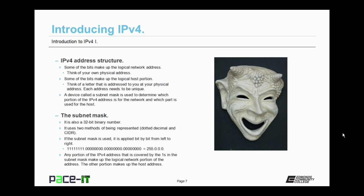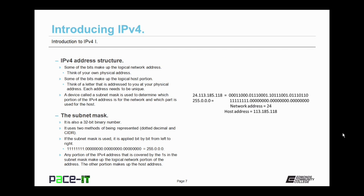So now let's talk about the subnet mask. It is also a 32-bit binary number. It can use two methods of being represented, dotted decimal like a normal IPv4 address, and the CIDR format, classless inter-domain routing format. If the subnet mask is used, it's applied bit by bit from left to right.